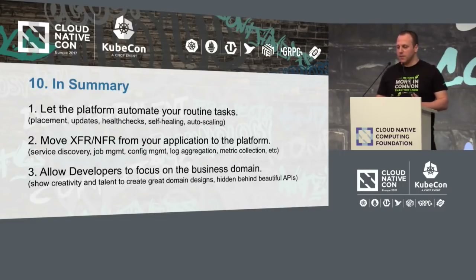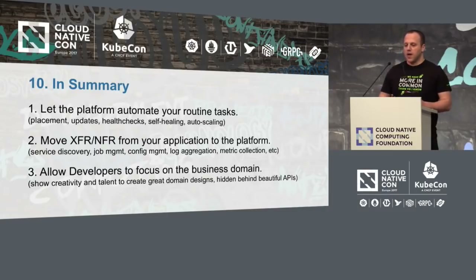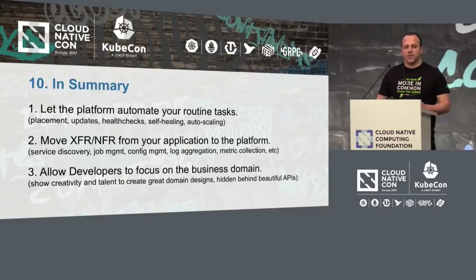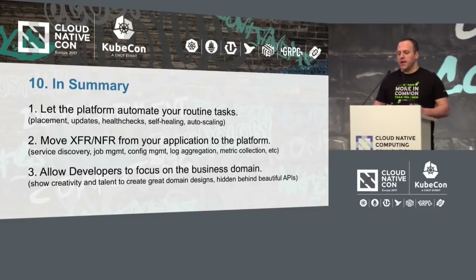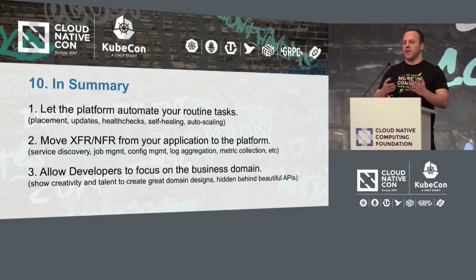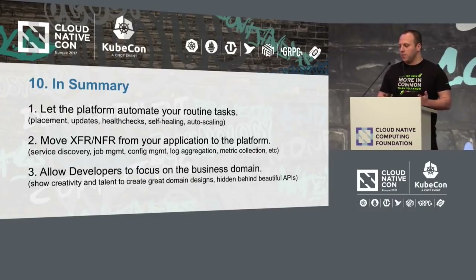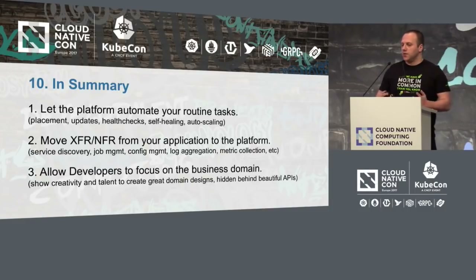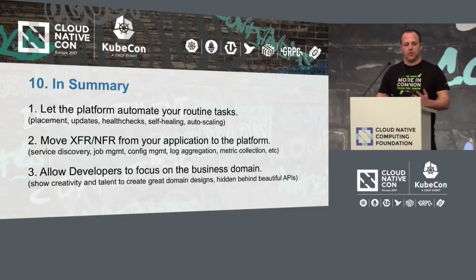In summary, here are three points to take away. Let the platform automate all your routine tasks such as placement, deployment, health checks, restarts, auto-scaling, etc. Try to move as many non-functional requirements or cross-functional requirements from the application layer down to the platform layer — things like service discovery, job management, and config management shouldn't be a concern for developers; they should just be a given. And then you can allow your developers to focus more on the business logic and create great domain-driven designs and beautiful APIs. Thank you.